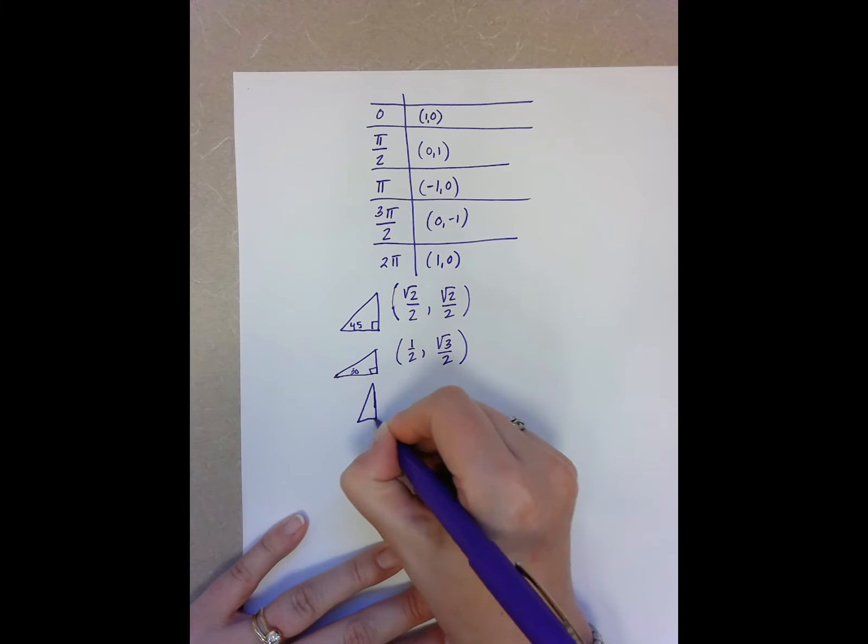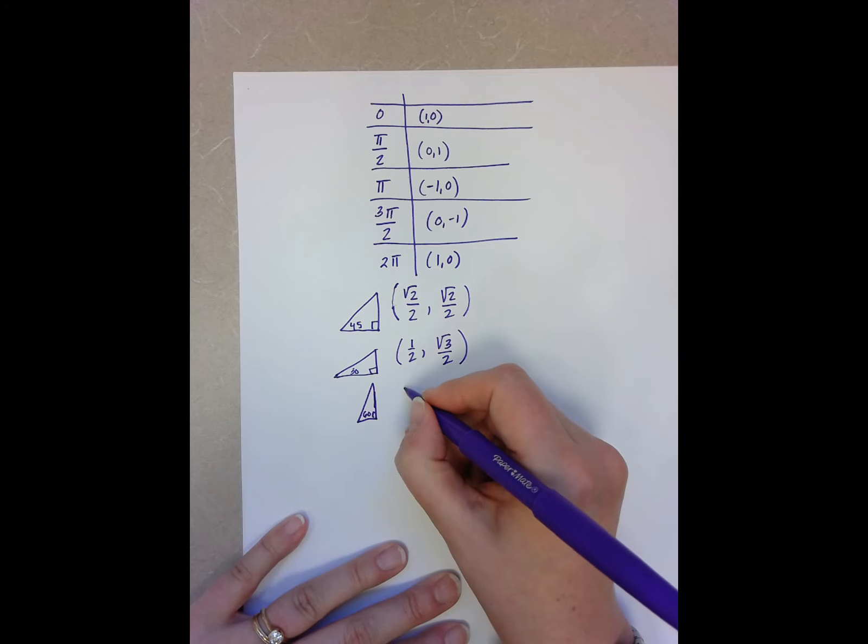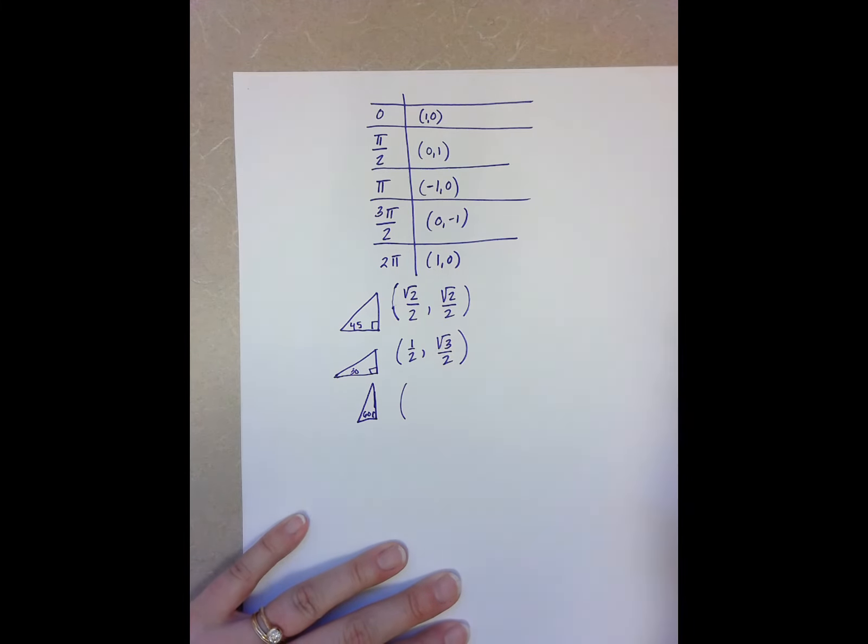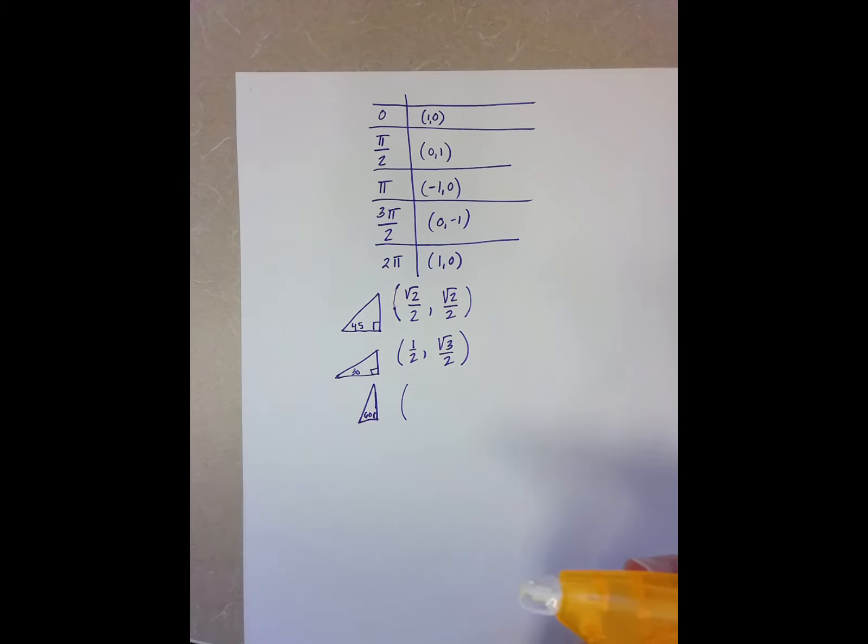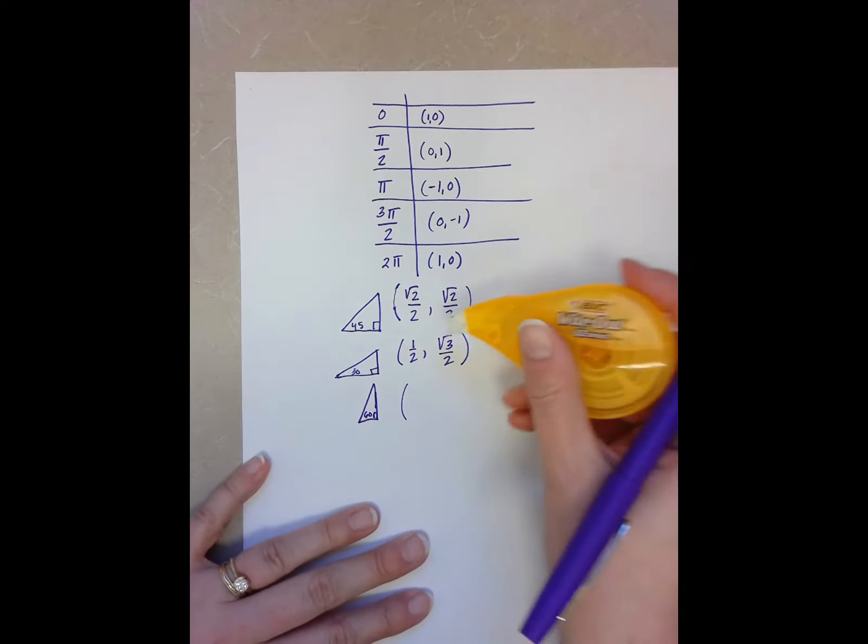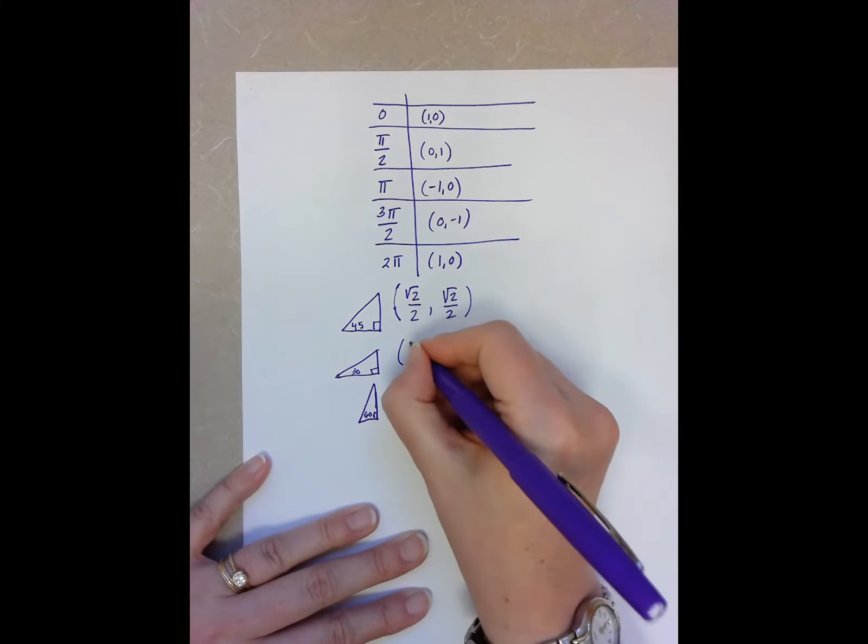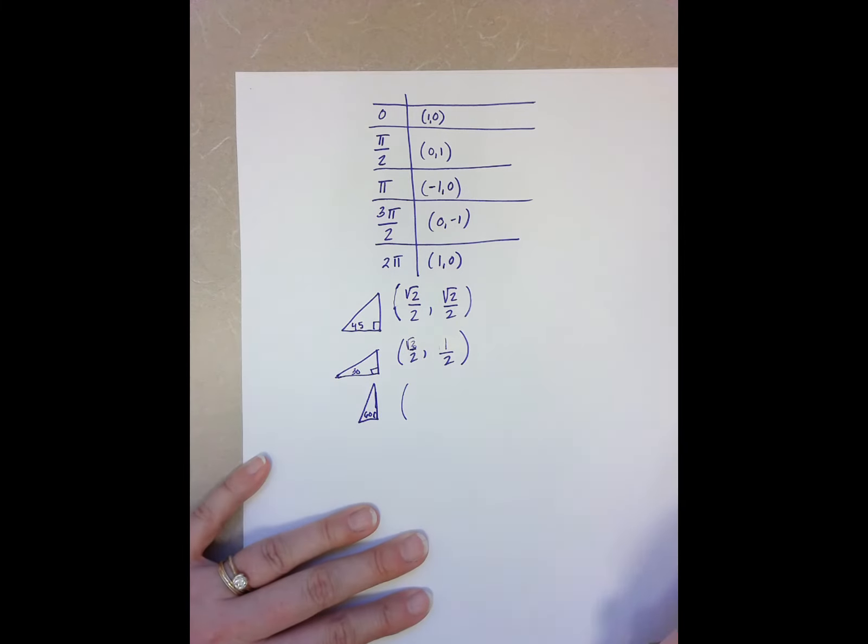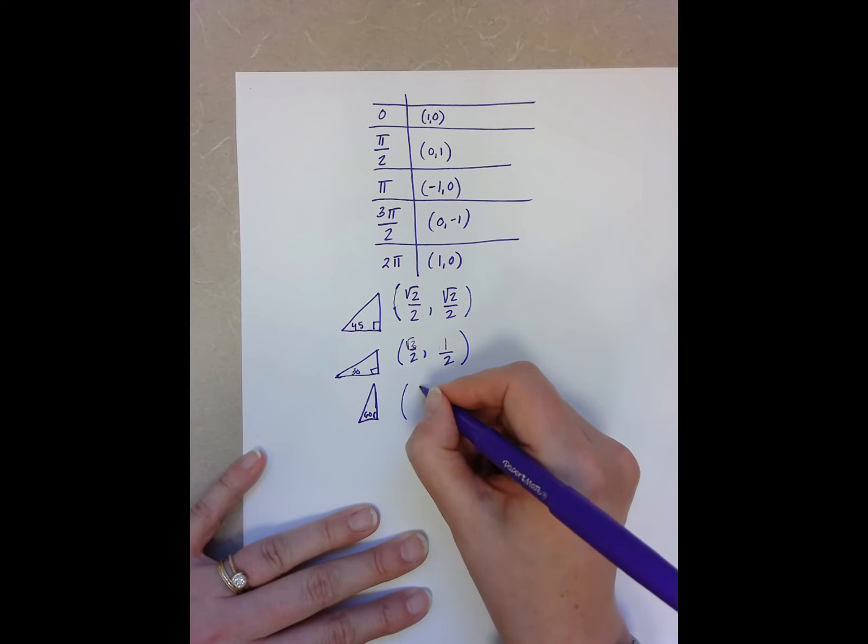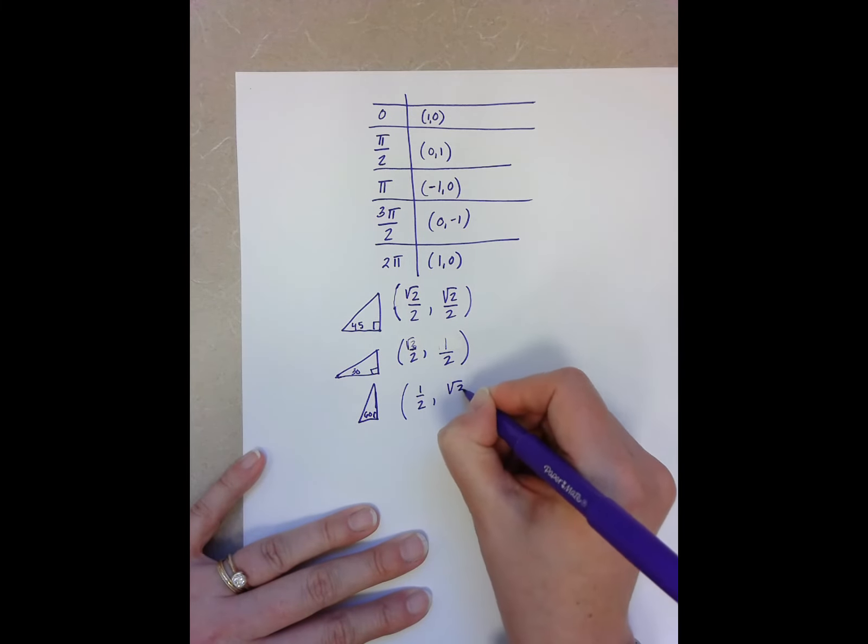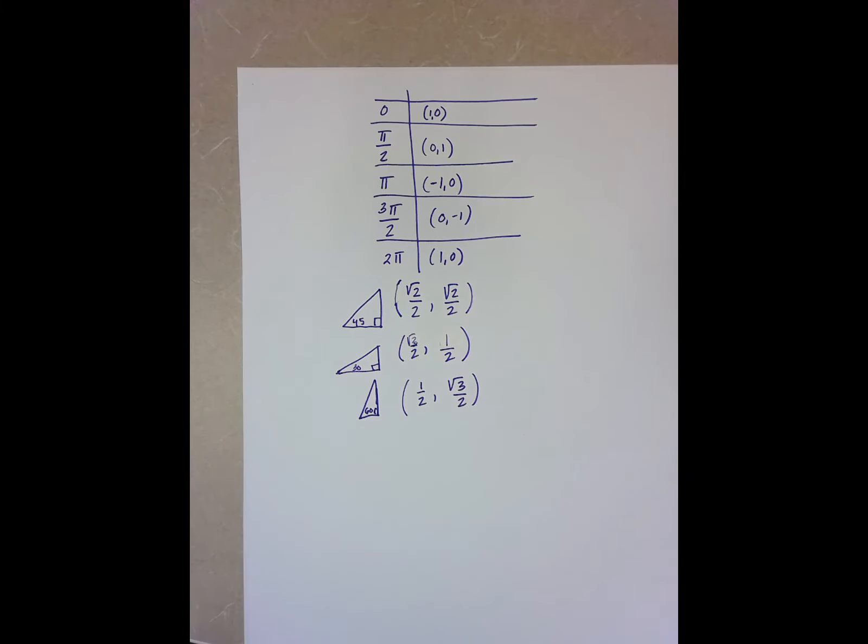For my 60, this is always going to be, oops, sorry, I just messed up the sign 1. I mean the 31. I apologize. It's always going to be root 3 over 2 comma 1 half, and the 60 is always going to be 1 half root 3 over 2. And then again, I'm paying attention to the signs, what quadrant I'm in,